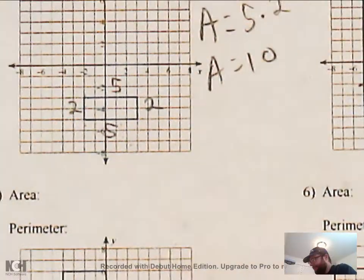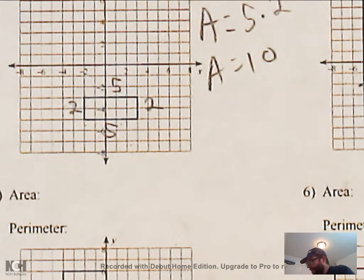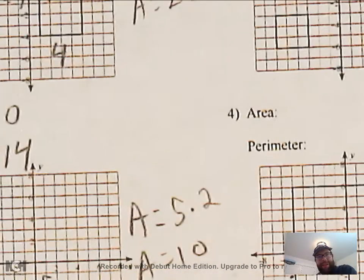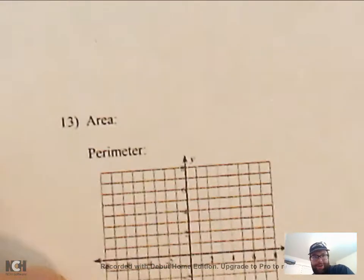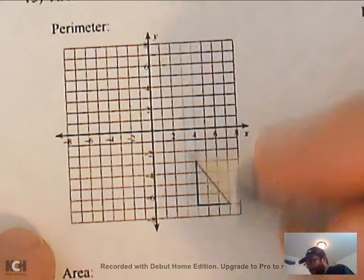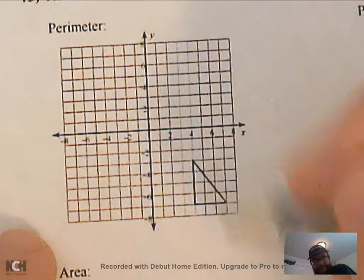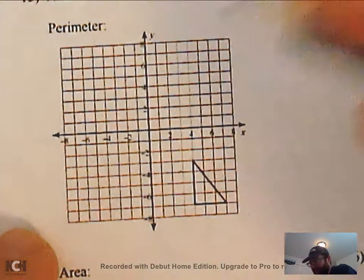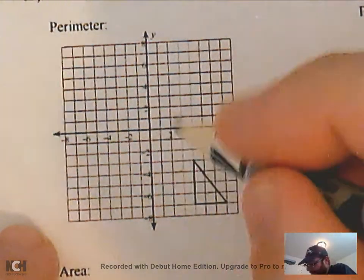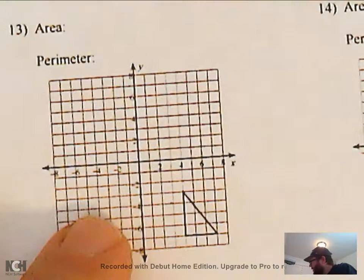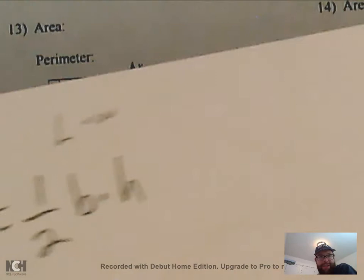That one has a longer perimeter than area — it's kind of a skinny shape. That's pretty much all you're doing with the rectangles today. But we are going to have triangles, and that's going to be the one you guys are all going to love to death. These are all right triangles, so it should be really easy to find the base and the height. Let's do the area first — it's actually going to be easier.